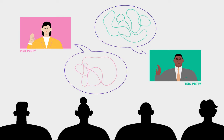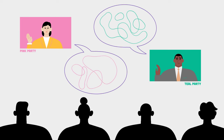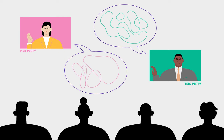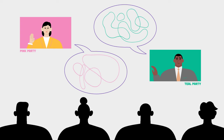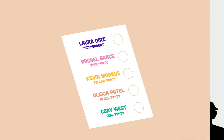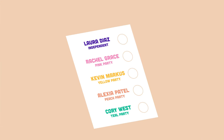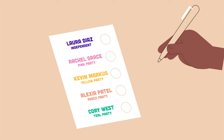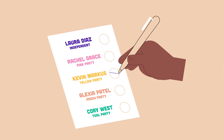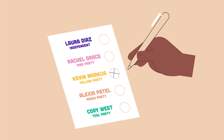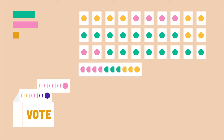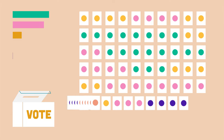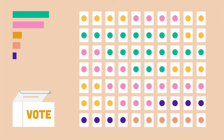It is the job of parties and candidates to share their ideas and vision for Canada, and convince voters they are the best choice. When it's time to vote, voters are given a ballot with the names of the candidates running for election in their riding, and asked to mark their choice for one of the candidates. After the election, the ballots are counted and the candidate with the most votes in each riding becomes the Member of Parliament.